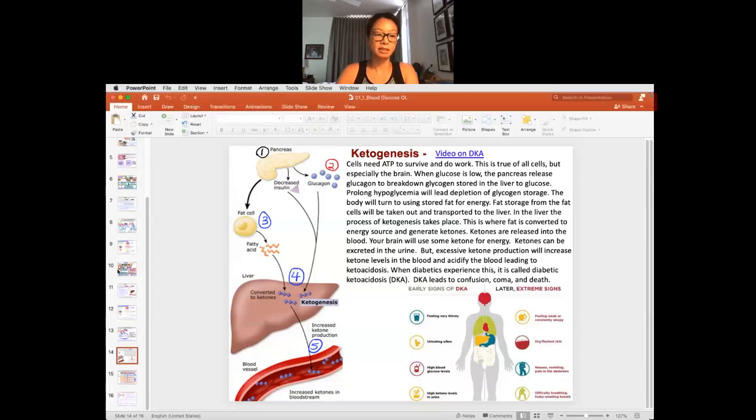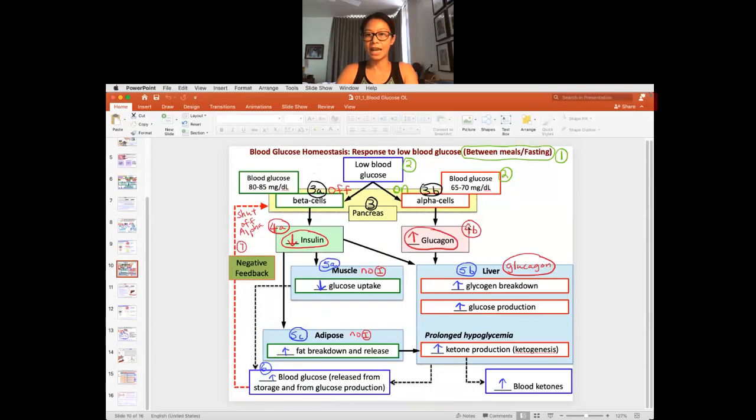So remember when we talked about between meal and fasting, how you only have so much glycogen storage in the liver, and then you're really dependent on fat breakdown for energy. That's called ketogenesis, the generation of ketone and breakdown of fat to allow the body to have energy.